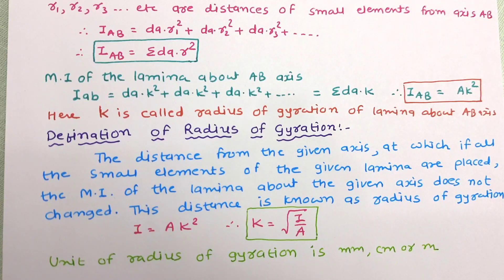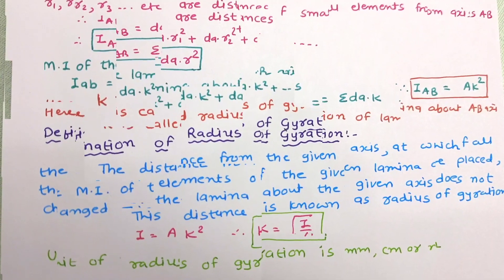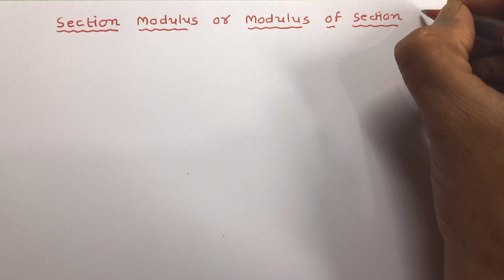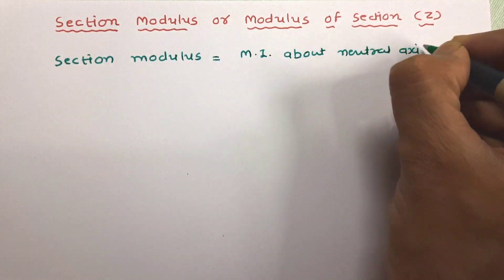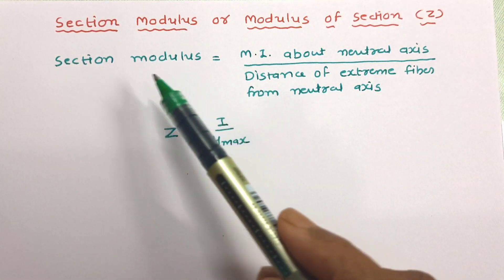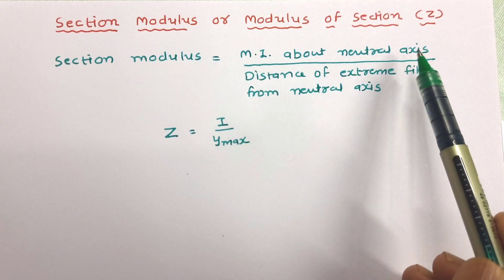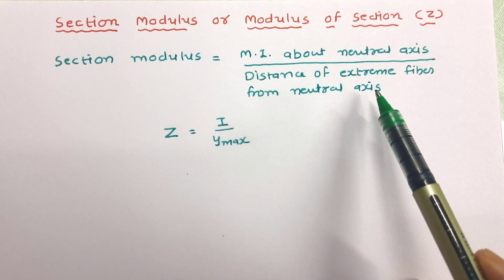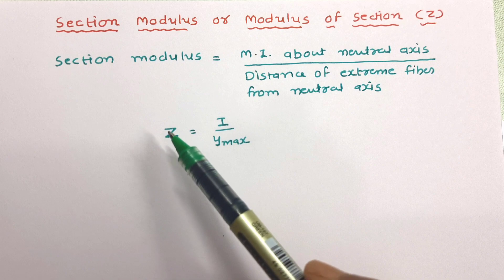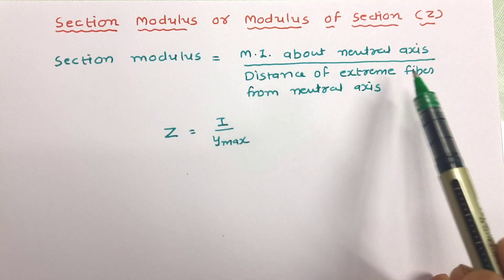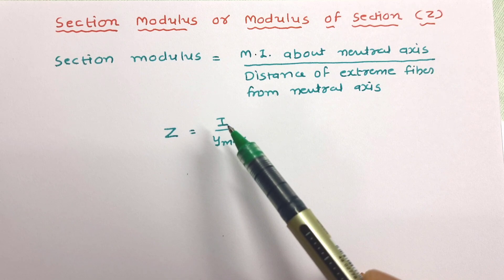Now let us learn about section modulus, also called modulus of section. Section modulus is denoted by capital Z. Section modulus is the ratio of moment of inertia about the neutral axis to the distance of the extreme fiber from the neutral axis. So Z is equal to I, that is moment of inertia, divided by the distance of the extreme fiber from the neutral axis. So let us try to learn from the figure.